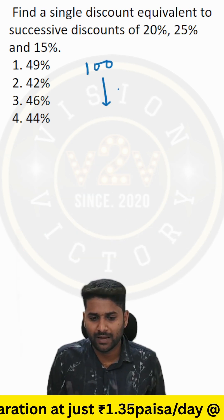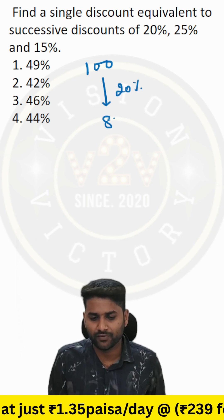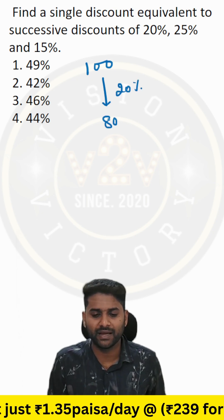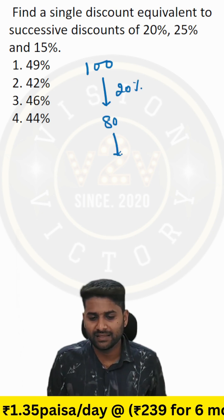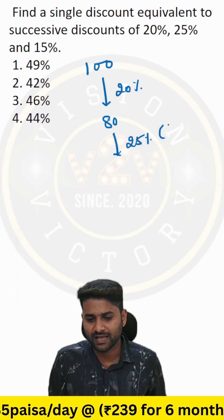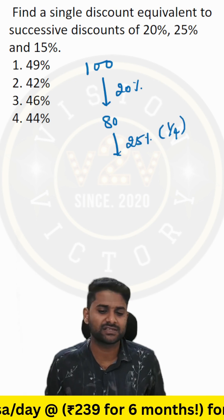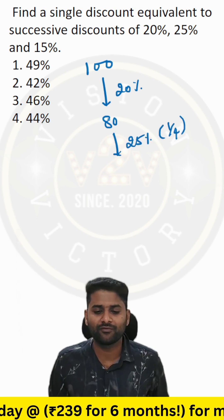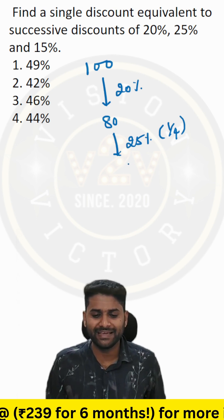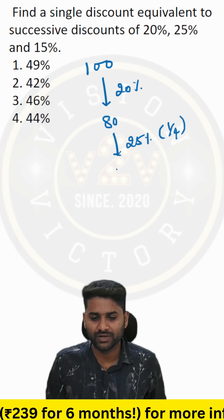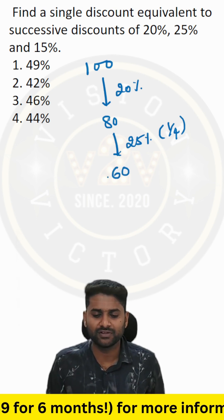The first discount is 20%, so now we are going to pay 80. Then they give another 25% discount. As you know, 25% is 1/4, and 1/4 of 80 is 20 units. So now you will get the same product for 60.